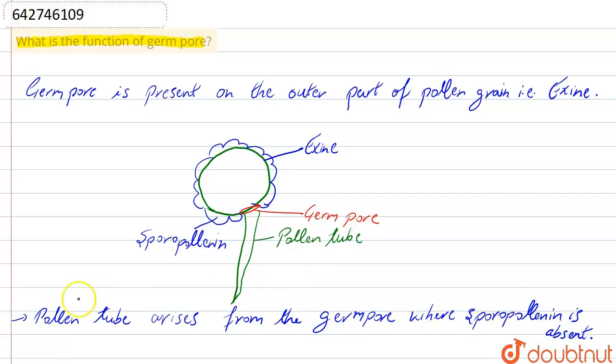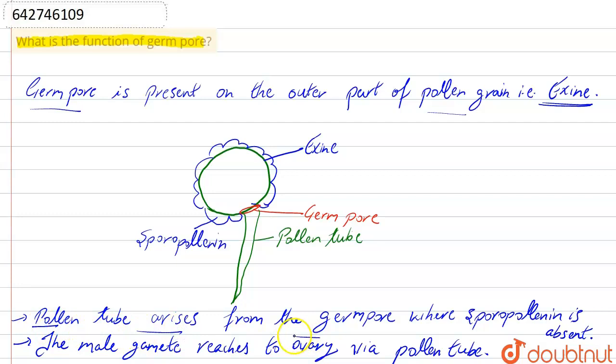All right, so the male gamete is present on the outer part of the pollen grain, that we call exine. And what is its function? The pollen tube arises from the germ pore.